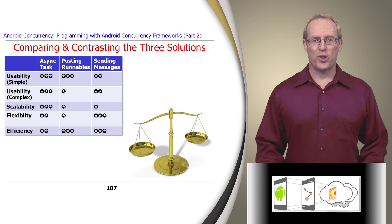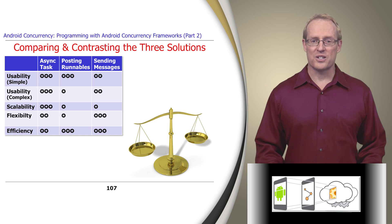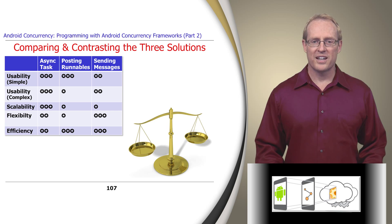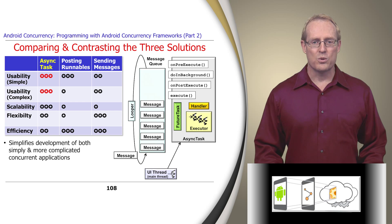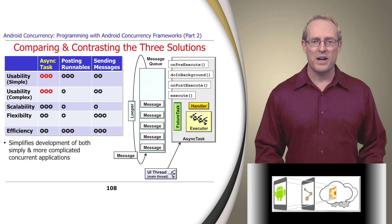Now that we've analyzed all three concurrency models implemented by the Threaded Downloads application, we'll compare and contrast these solutions along several dimensions, including usability for simple and complex applications, scalability, flexibility, and efficiency. AsyncTask provides a set of tightly integrated classes that simplify the development of both simple and complex concurrent applications whose long-duration operations run in one or more background threads and publish their results to the user interface thread without manipulating threads, handlers, messages, or runnables explicitly.